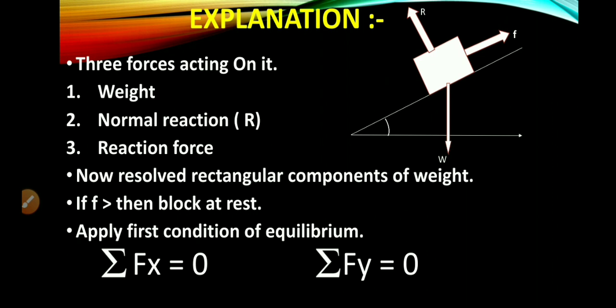Consider a block of weight placed on an inclined plane making an angle theta. There are three forces acting on this block: Number one, the weight moving vertically downward. Second, normal reaction acting perpendicular to the plane. The third is reaction force which is acting up the plane.